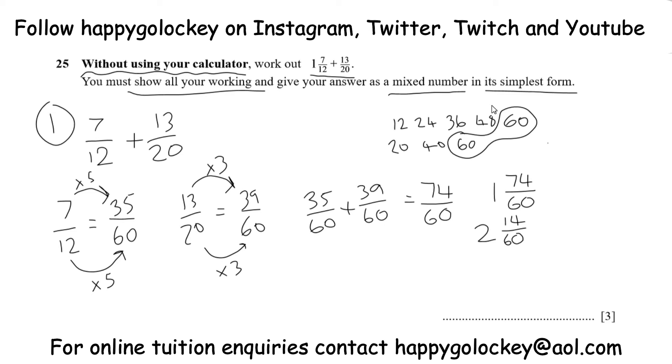Nearly there. The last thing we need to do is simplifying. So looking at 14 and 60, they have a common factor, a number that goes into both of them, of 2. So we just need to divide that by 2. And 14 60ths, when you divide by 2, is 7 30ths.